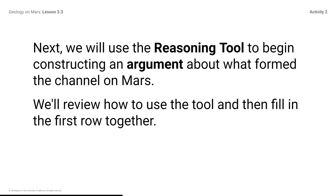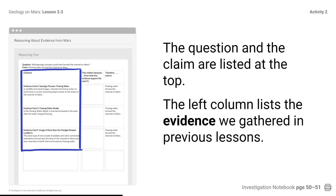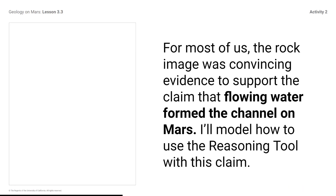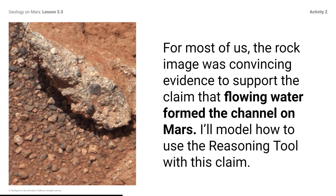Next, we will use the reasoning tool to begin constructing an argument about what formed the channel on Mars. We will review how to use the tool, and then fill in the first row together. The question and the claim are listed at the top. The left column lists the evidence we gathered in the previous lessons. For most of us, the rock image was convincing evidence to support the claim that flowing water formed the channel on Mars.